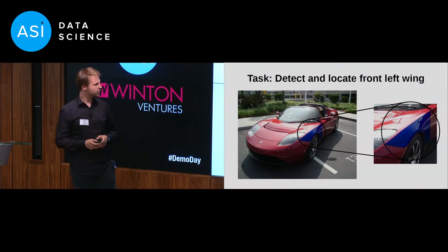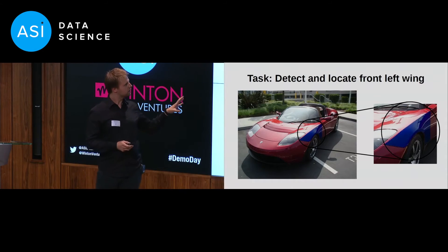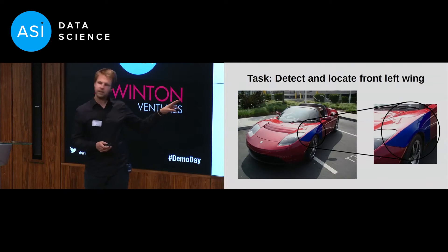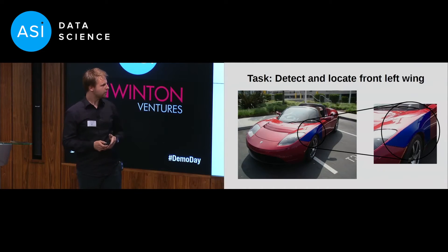Ideally, we would like to create an algorithm that, given a picture of a car, is able to highlight the area — which I have manually highlighted here in blue — and output that image.